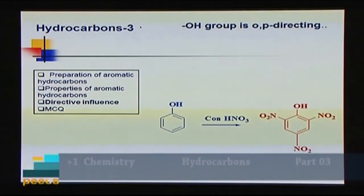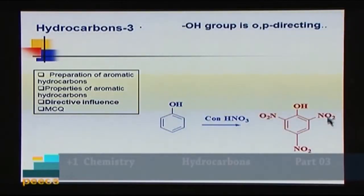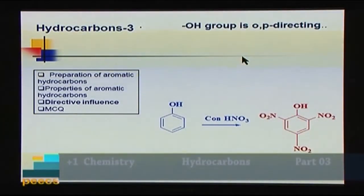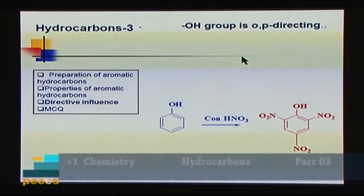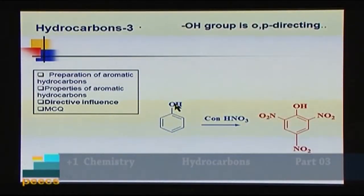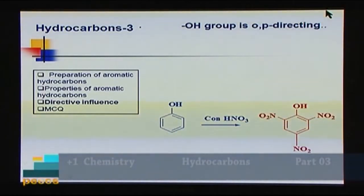If phenol is treated with concentrated nitric acid, the –OH group being ortho-para directing causes nitro groups to enter at the ortho positions and para position. The product is 2,4,6-trinitrophenol. The OH group activates the benzene ring so strongly that all ortho and para positions are occupied with nitro groups, and the reaction is faster than with benzene.